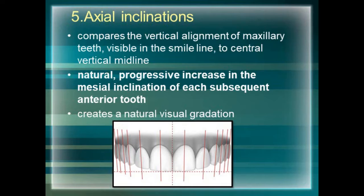The lateral incisor has the cervical part tucked in and the incisal edge tilted slightly labially. The canine has a prominent cervical area with the cusp tip having a slight lingual inclination. Viewing from the posteriors starting from the canine, all teeth have the same mesial inclination towards the midline as the canine. This gives a natural visual gradation making the teeth look smaller as we go posteriorly.